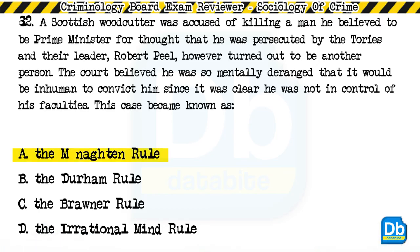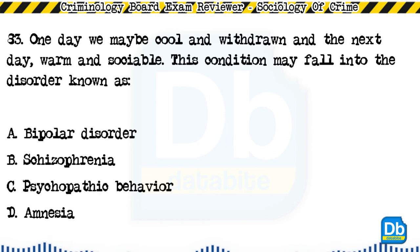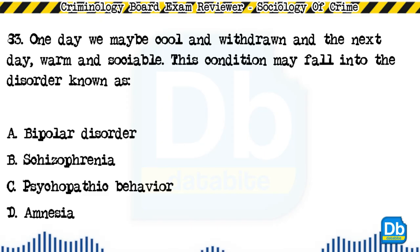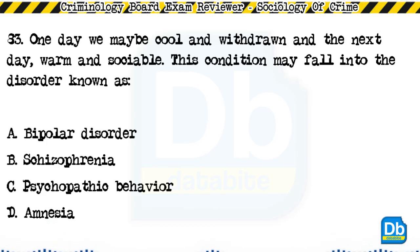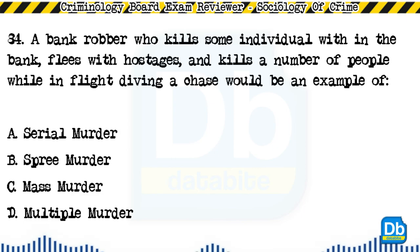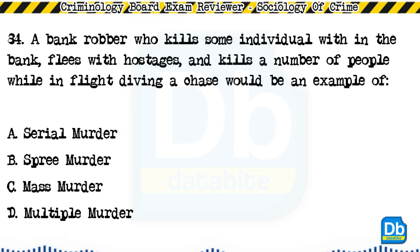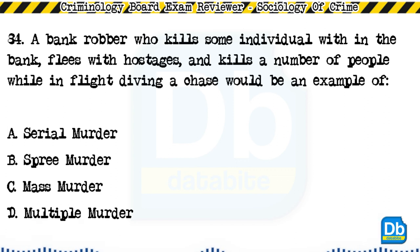Question 83: One day we may be cool and withdrawn, and the next day warm and sociable. This condition may fall into the disorder known as: a) bipolar disorder, b) schizophrenia, c) psychopathic behavior, d) amnesia. The answer is A, bipolar disorder. Question 84: A bank robber who kills some individuals within the bank, flees with hostages, and kills a number of people while in flight during a chase would be an example of: a) serial murder, b) spree murder, c) mass murder, d) multiple murder.